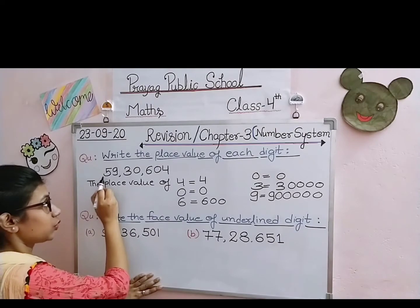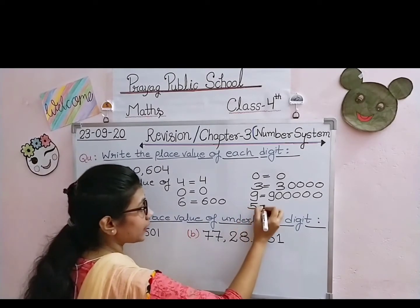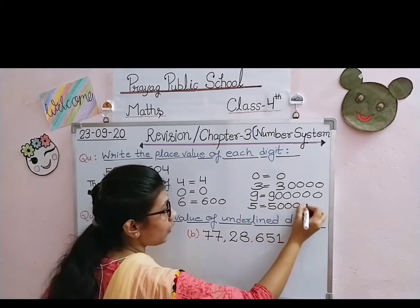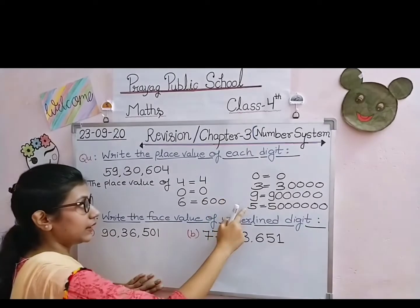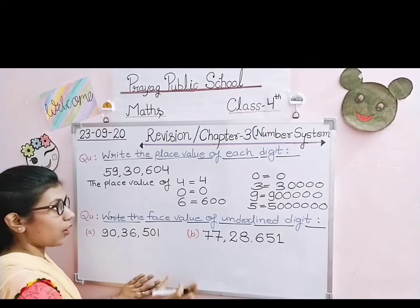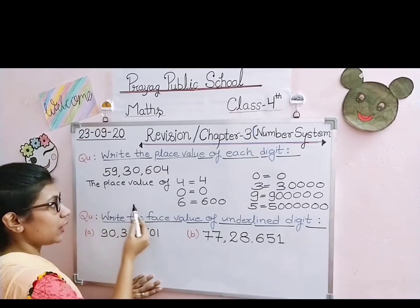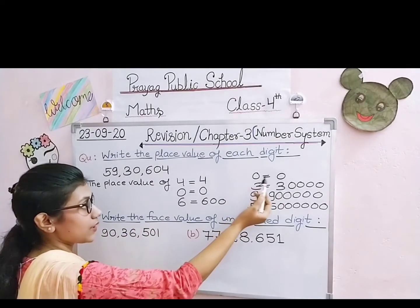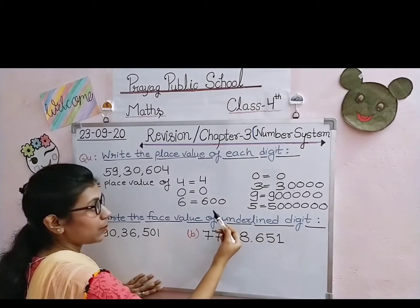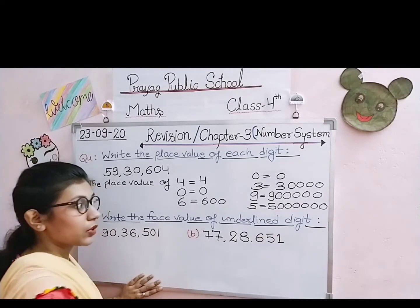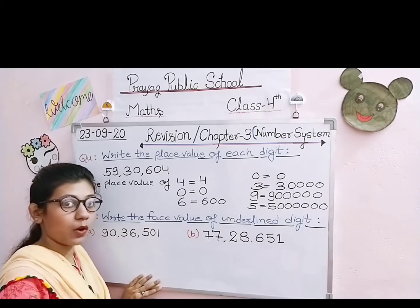5 किस place पे है? 10,000 के place पे नहीं — आगे वाले number में 5 lakh से higher place पे है, तो 5 की place value में 6 zeros increase करेंगे: 50,00,000। तो हमने हर एक digit की place value लिखी। आप sentences लिखकर sequence में solve करोगे: the place value of 4 is 4, the place value of 0 is 0, the place value of 6 is 600, the place value of 0 is 0, the place value of 3 is 30,000, the place value of 9 is 9,00,000, the place value of 5 is 50,00,000। 0 की place value always 0 होगी।